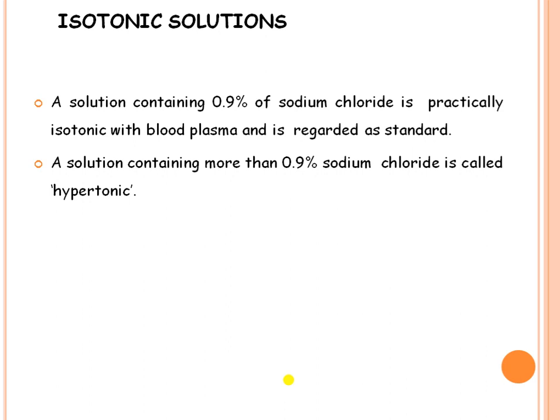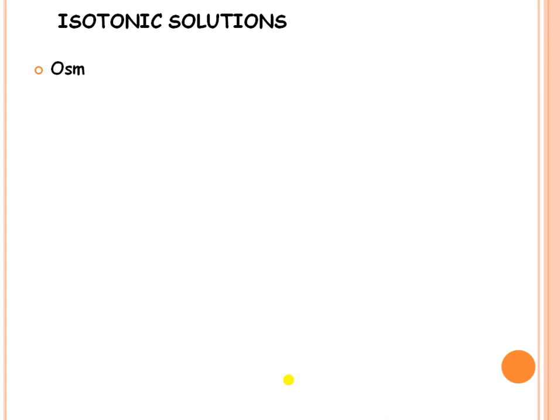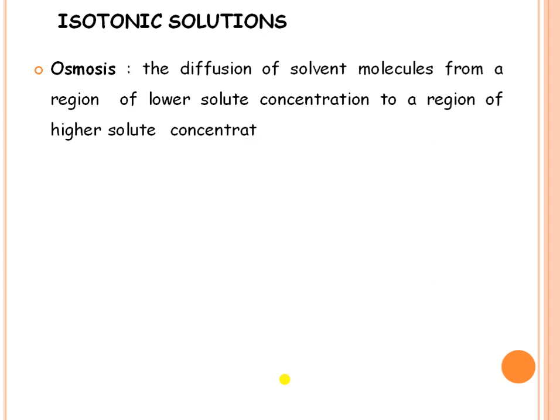When you increase the concentration of sodium chloride to more than 0.9%, it becomes hypertonic. Conversely, when you decrease the concentration of sodium chloride to less than 0.9%, a hypotonic solution is prepared. Now we will see what osmosis is: the diffusion of solvent molecules from a region of lower solute concentration to a region of higher solute concentration.